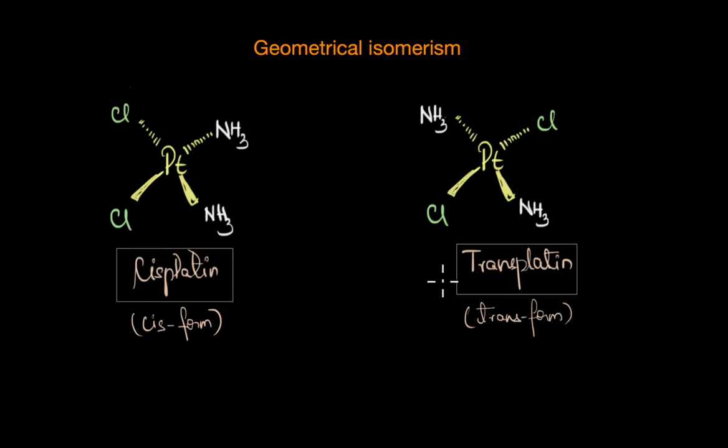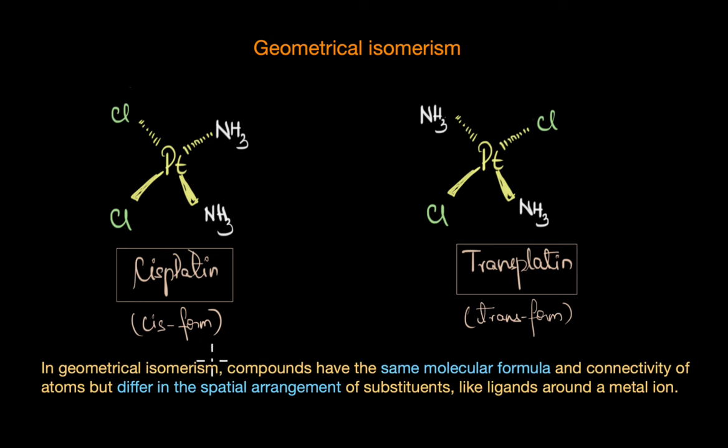So basically we have the same set of ligands around the central metal ion, but they are arranged differently in space. And in molecular terms, this is what we refer to as geometrical isomerism. In geometrical isomerism, compounds have the same molecular formula and connectivity of atoms but differ in spatial arrangement of substituents, like the ligands around the central metal ion here.